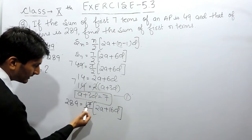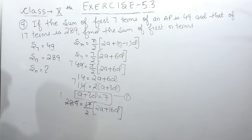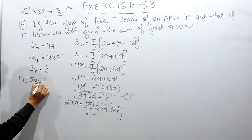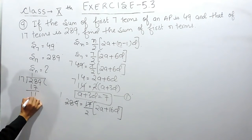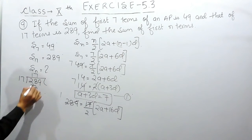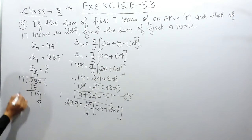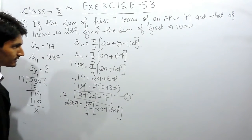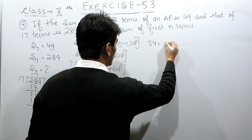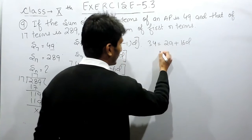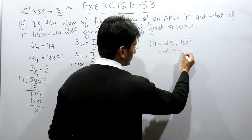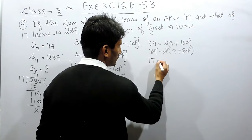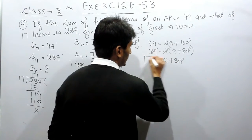Cancelling 17 from both sides and cross-multiplying gives 34 equals 2A plus 16D. Taking 2 as common, this becomes 17 equals A plus 8D. This is our second equation.